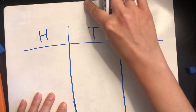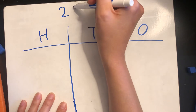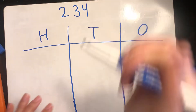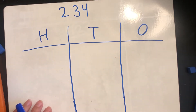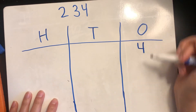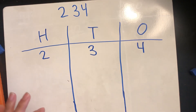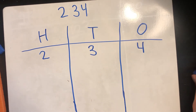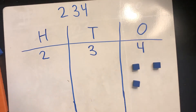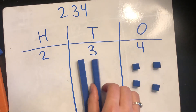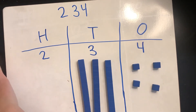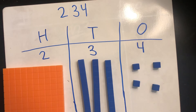Let's do the number two hundred thirty-four. If we look at this number, we can put each of the digits into one of the places. We have four ones, three tens, and two hundreds. So if I wanted to build this number using base ten blocks, I would need four ones cubes, three tens sticks — one, two, three — and two hundreds flats — one, two.